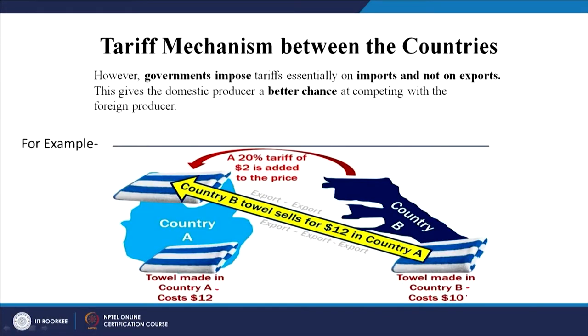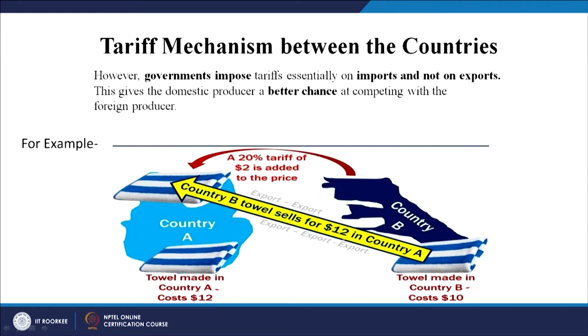There are two countries A and B. Producing a towel in country A costs 12 dollars and in country B 10 dollars. Country B's towel sells for 12 dollars in country A because the government of the importing country puts in a 20 percent tariff of 2 dollars, making it again 12 dollars. When both countries have the same price, the unfair price advantage is removed. However, if country B's real cost without subsidies is 10 dollars due to factor endowments, then imposing a tariff is not competitive in nature.